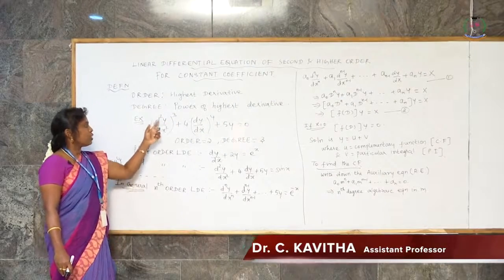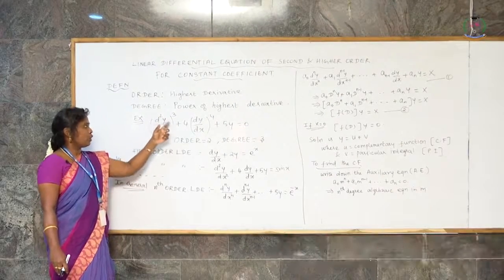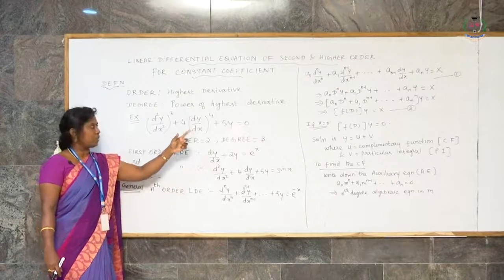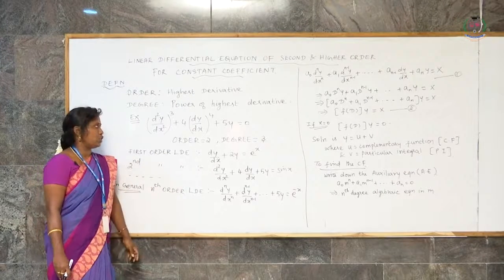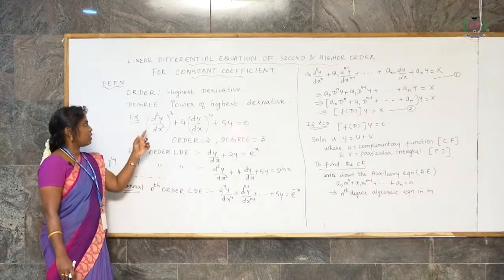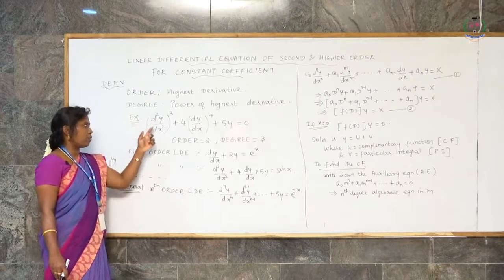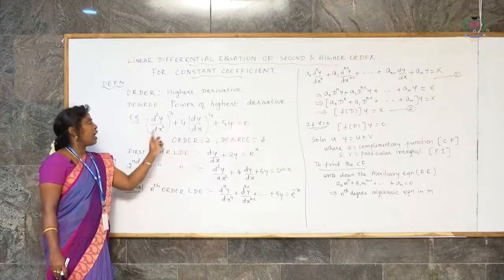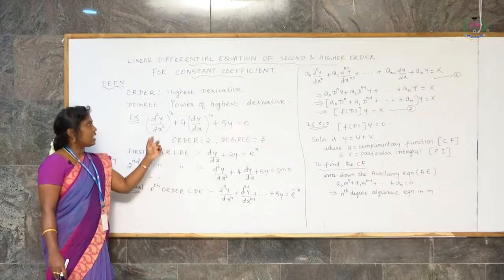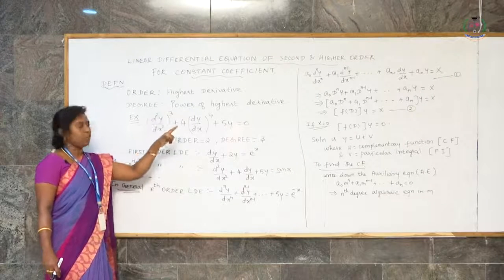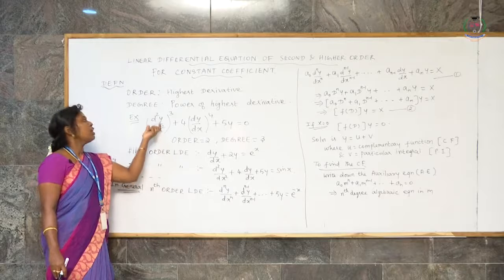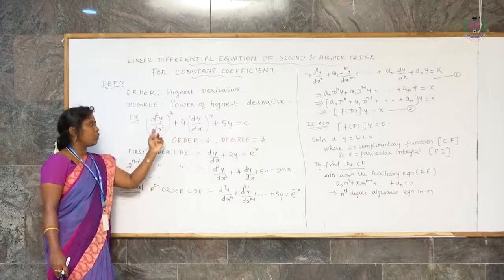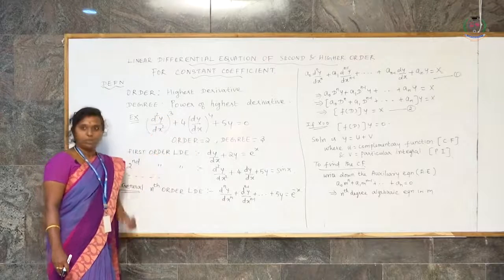Take for an example: d²y/dx² whole cubed plus 4(dy/dx)⁴ plus 5y equals 0. Here the highest derivative is d²y/dx², so the order is 2. The degree is the power of the highest derivative, which here is 3. Therefore, degree is equal to 3.